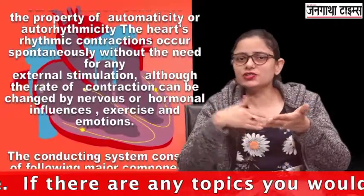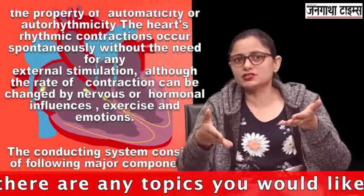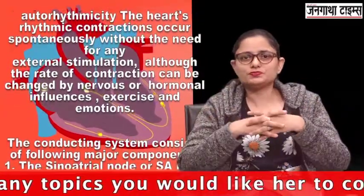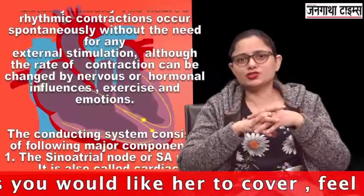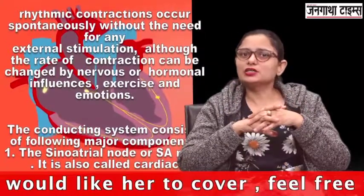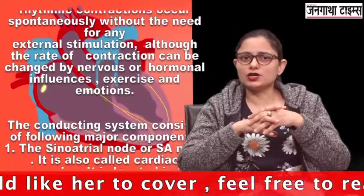For example, the vagus nerve decelerates the heart. Let's talk about the components of the conducting system of heart.